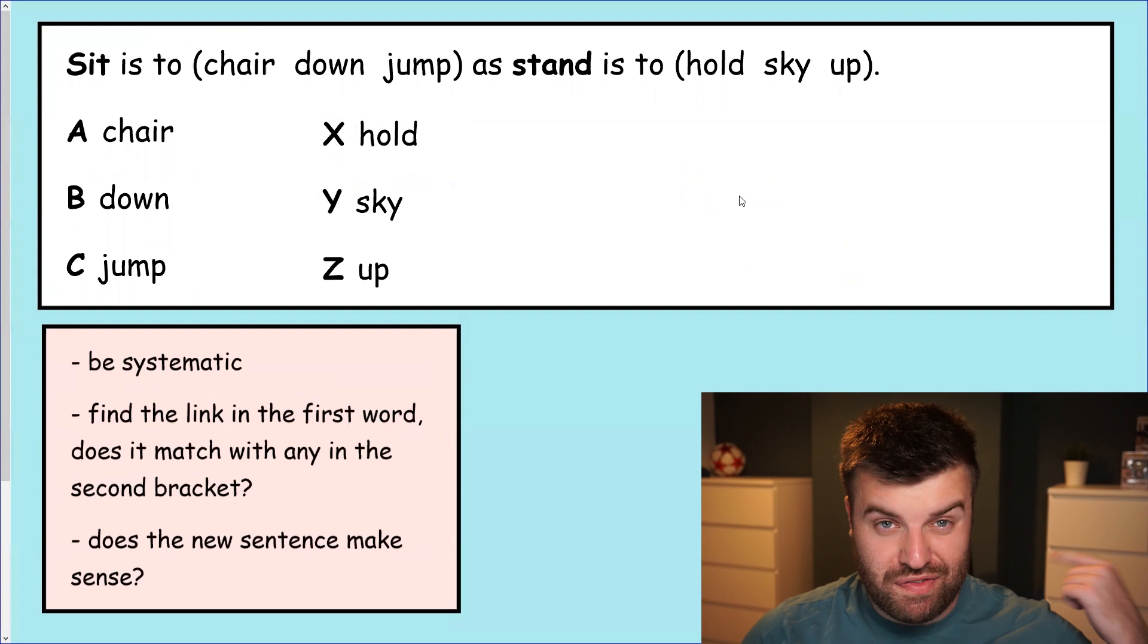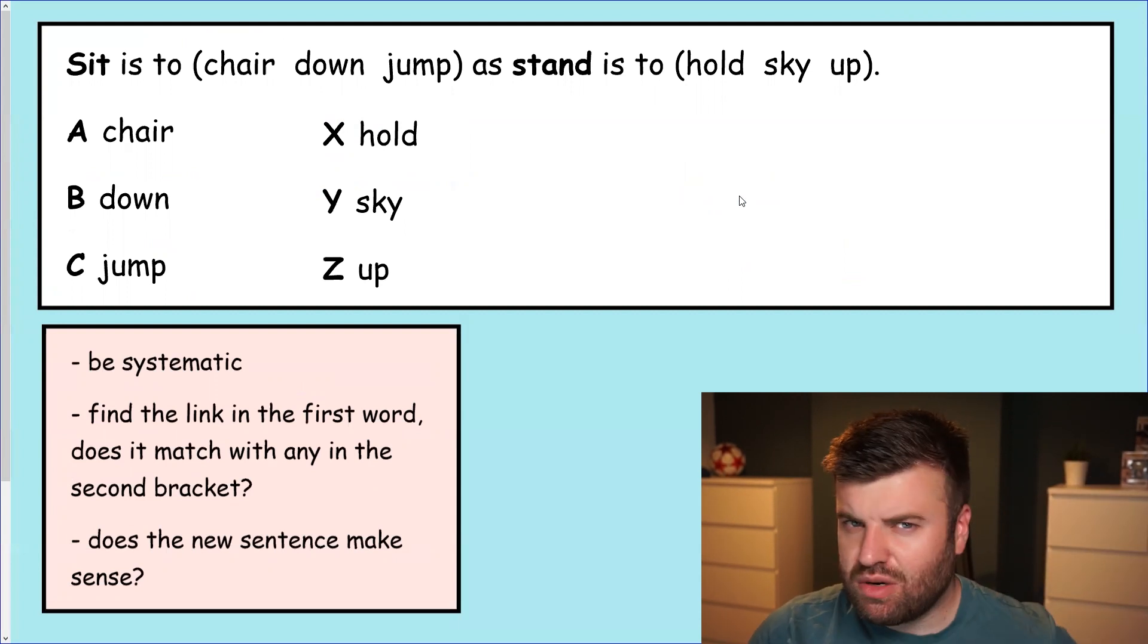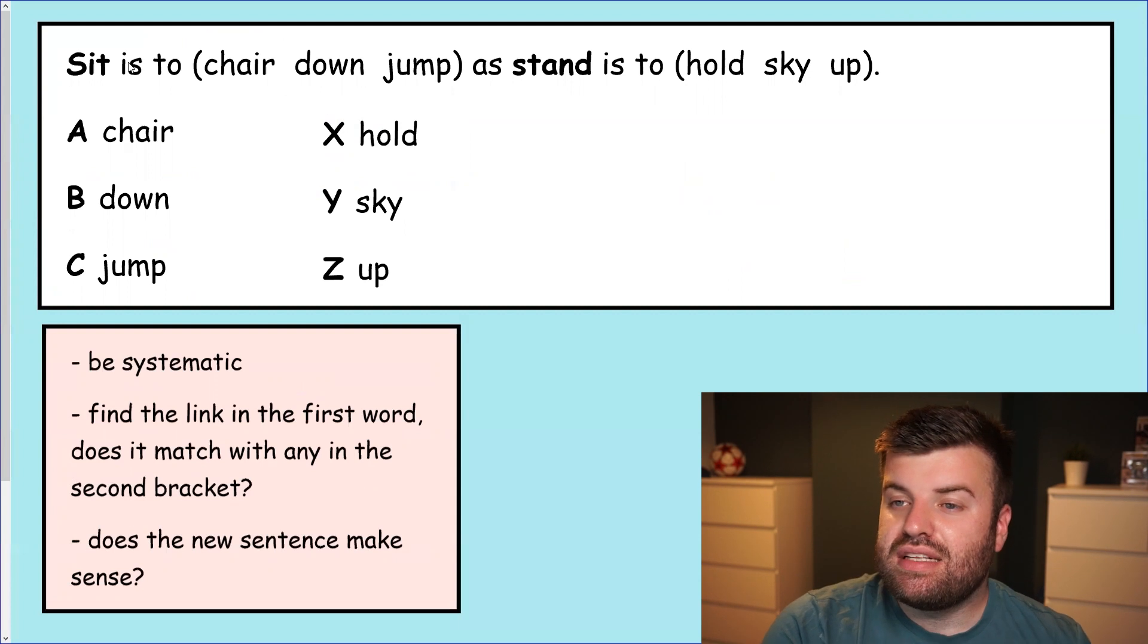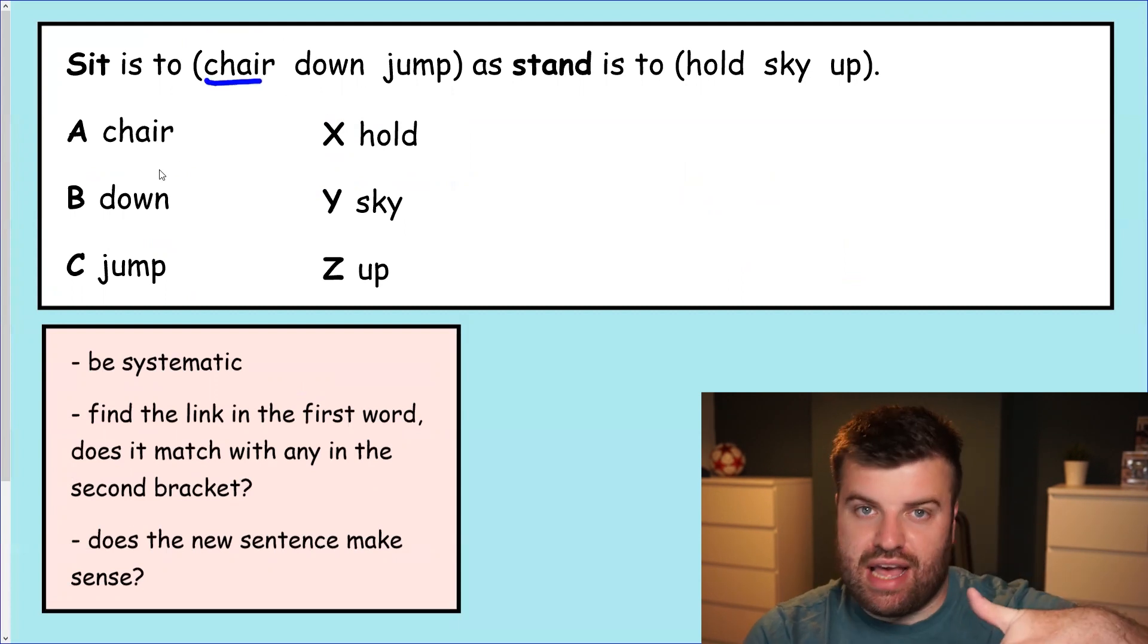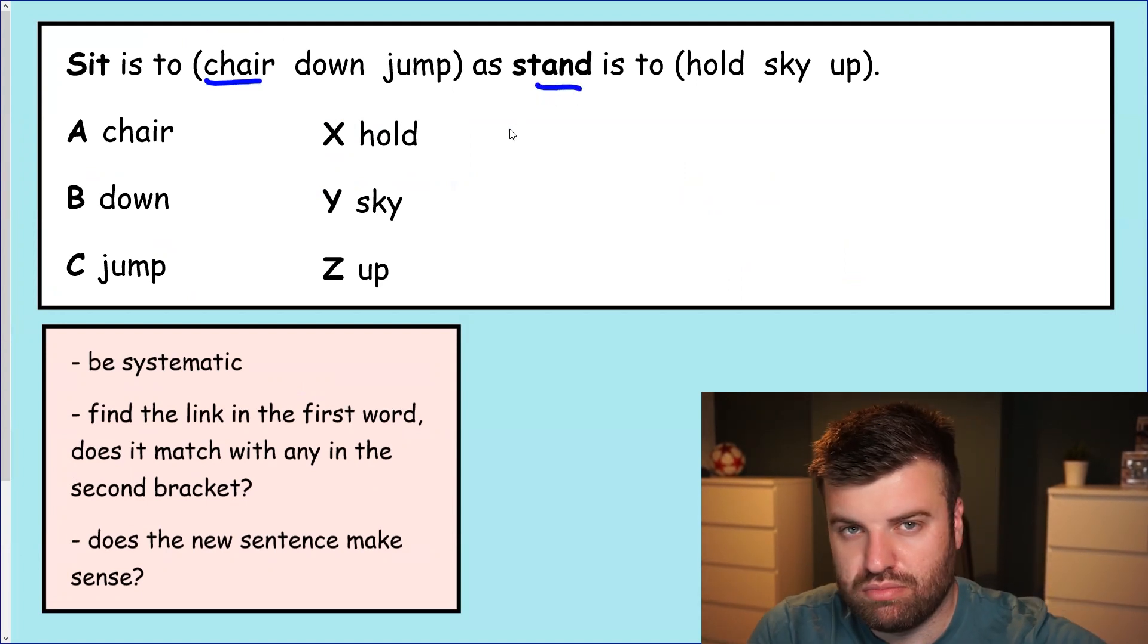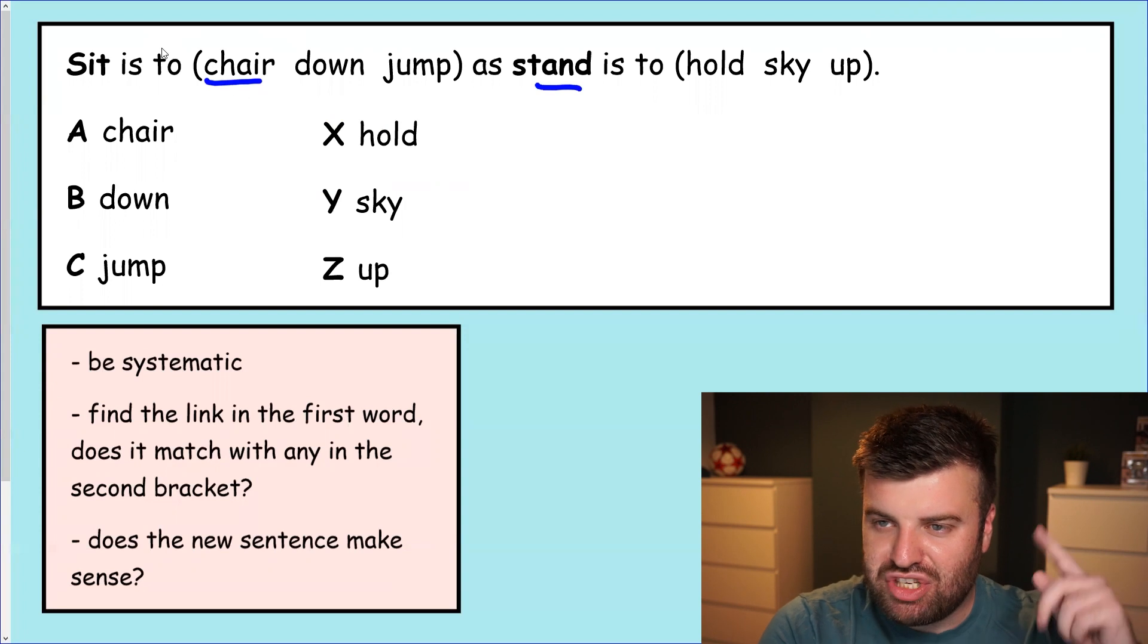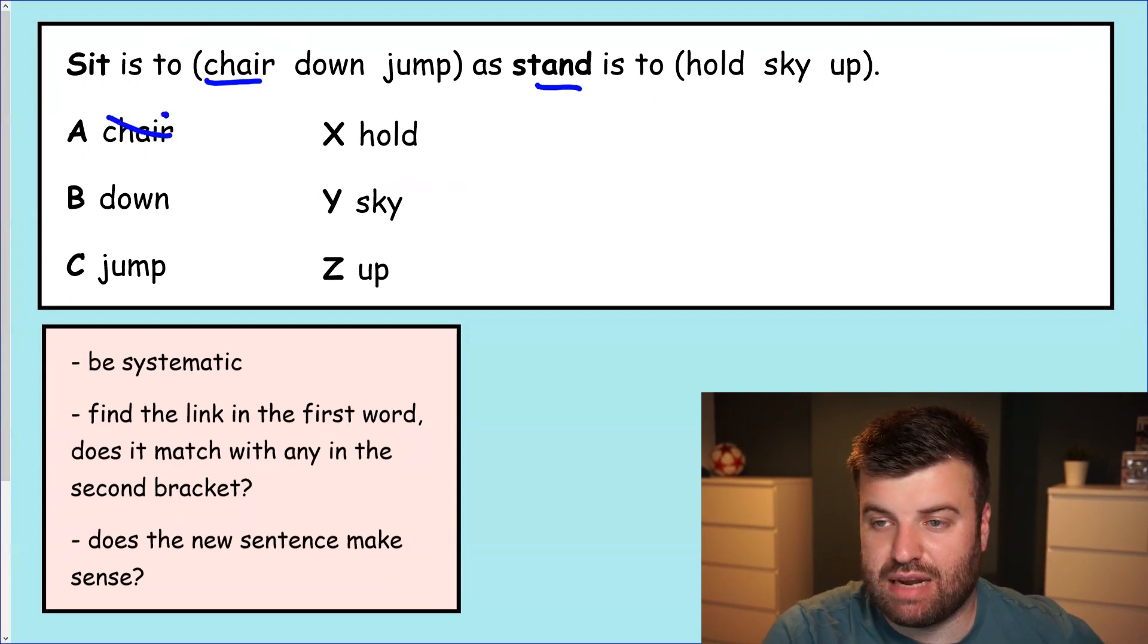So one more for us to go through. The first one was a profession and what they do. The second one was opposites. Let's take a look at what this one could be. Could be something different again. As long as it's the same link in both the start and the end of the sentence we're going to get an answer. Sit is to chair. We're working systematically. You sit in a chair. So let's see if there's a link there for stand. You stand in a hold. No. You stand in a sky. No. You stand in an up. No. So the way that chair goes with sit does not match with any of the second bracket. So we can get rid of chair as an option.